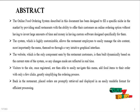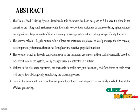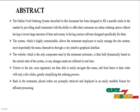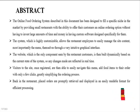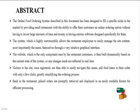Users can choose their food options. The website, which is the only component seen by the restaurant customers, is built dynamically based on the current state of the system, so any changes made are reflected in real time. Visitors to the site, once registered, are then able to easily navigate the menu and add food items to the order with only a few clicks, greatly simplifying the ordering process. Back in the restaurant, orders are promptly retrieved and displayed in an easily readable format.